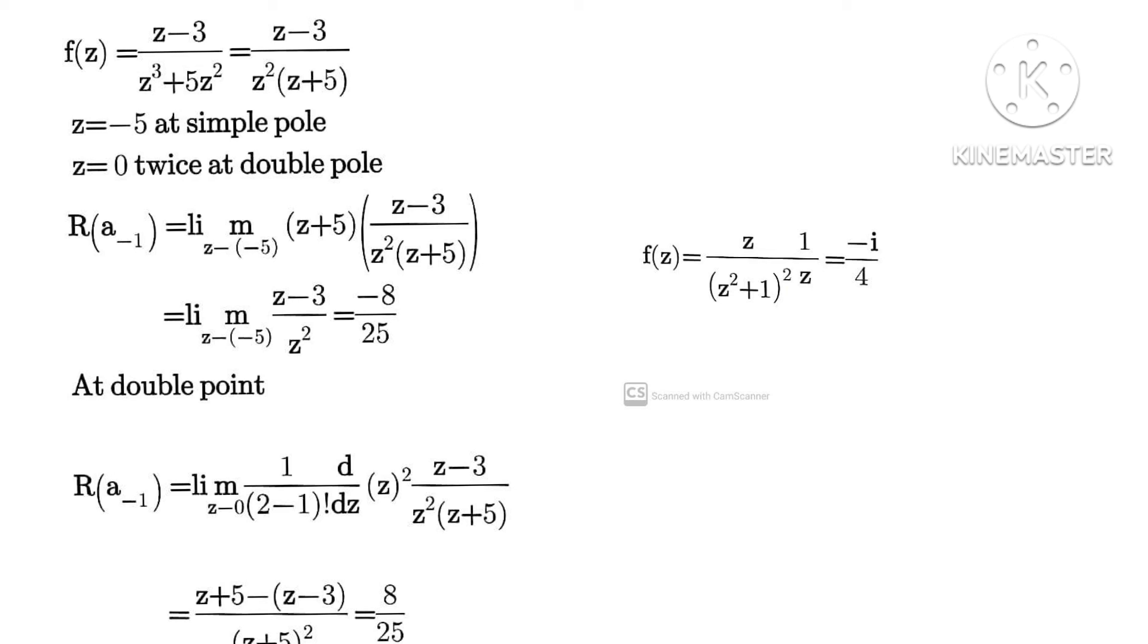So using same approach, just try out this question: f(z) equals to z over (z squared plus 1) all squared times 1 over z. So you can just do it as 1 over (z squared plus 1) all squared. You can confirm your answer to be minus i over 4. Thank you.